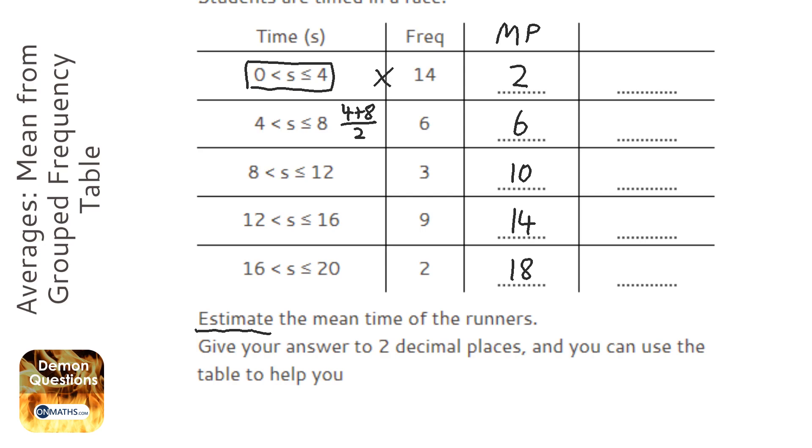Then, what we do is we get the frequencies and times them by the midpoint. So, it's the same as if it wasn't a group now. So, we do 14 times 2, which is 28. 6 times 6 is 36. 3 times 10 is 30. And then you can use a calculator for this.